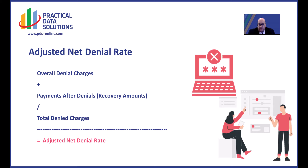The way you would calculate this is to take your overall denied charges, add back in the recovery amounts or the payments that come in after the denial, and divide that by your total denied charges. Once you get this denial rate, that helps you understand what is truly being written off because of denials and uncollected, versus just an overall denial rate where you may actually have a fairly significant recovery rate coming in.